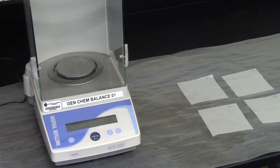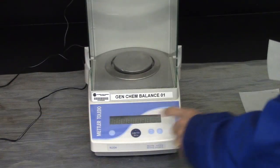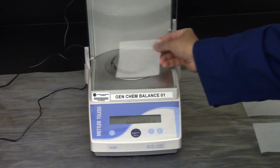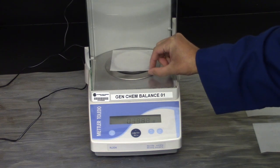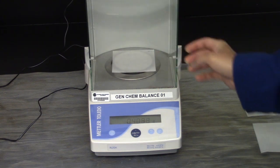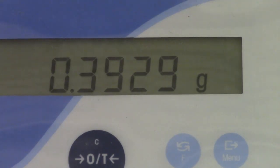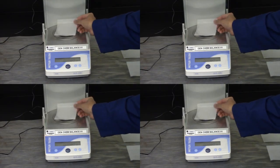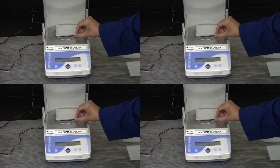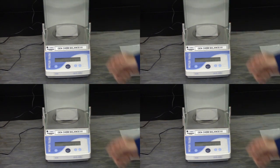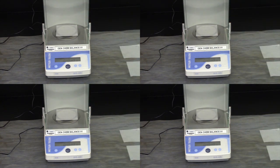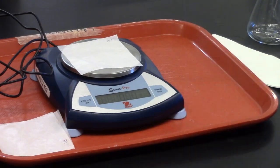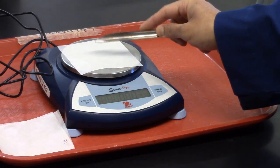Using an analytical balance weigh four labeled weighing papers. Two for the commercial and two for the synthesized sodium hydrogen carbonate. Record masses and balance number. Two samples will be for the controlled commercial sodium hydrogen carbonate and the remaining two will be for the synthesized. Transfers are not allowed in the analytical balance room. Return to the lab.